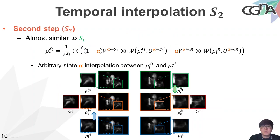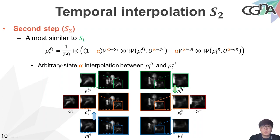The equation for the second step is similar to the first step's equation. However, because the first step frame and forward advection results are both computed for the same arbitrary time t, we compute the second step smoke frame for an arbitrary state alpha. As shown in the figure, the forward advection result (blue) is more physically accurate than the first step result (green), so the second step result is generated closer to the forward advection result. On the other hand, when the first step result is more accurate than the forward advection result, the final result is generated closer to the first step result.